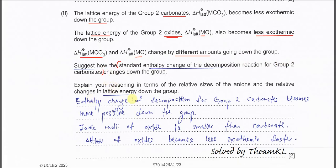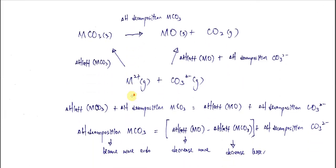Before continuing, here is a simple Hess cycle to help understand. We start with the decomposition of the Group 2 metal carbonate: the metal carbonate decomposes to form metal oxide and CO2 — this is what we want. We need to link the lattice energies for both the carbonate and the oxide. We put the Group 2 carbonate, and when the two gaseous ions combine, they form the carbonate — this is the lattice energy of the Group 2 carbonate, the energy released.